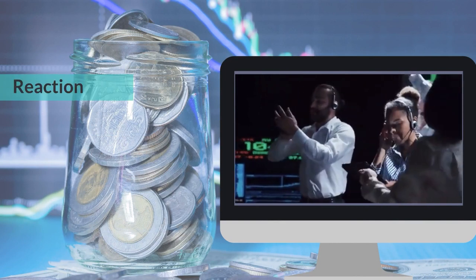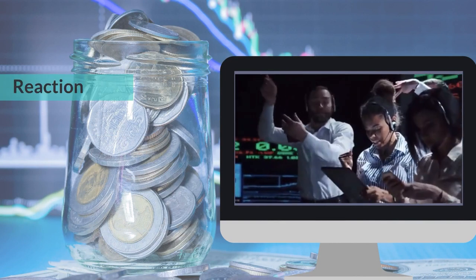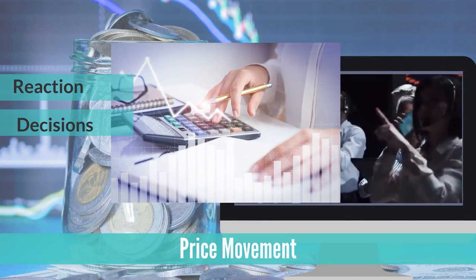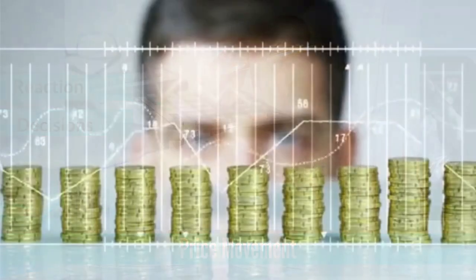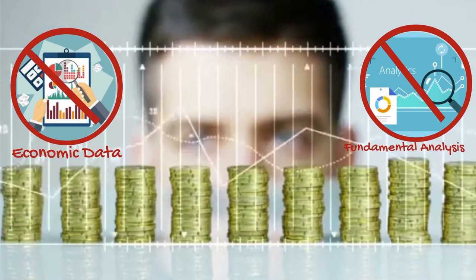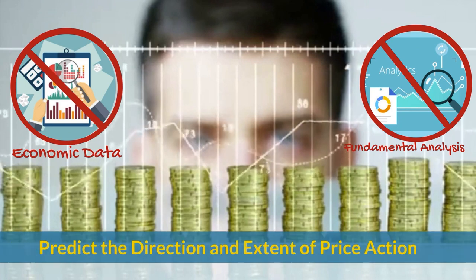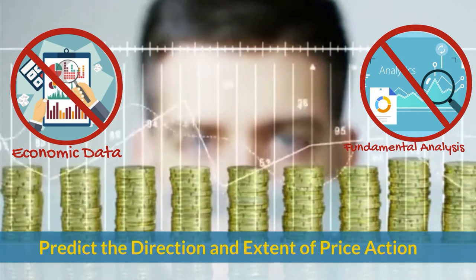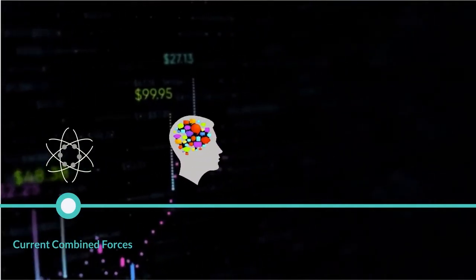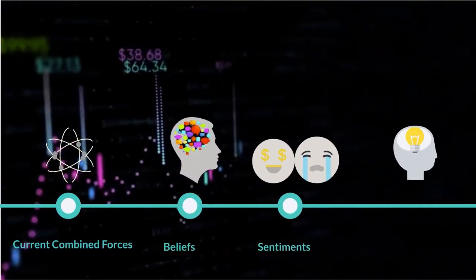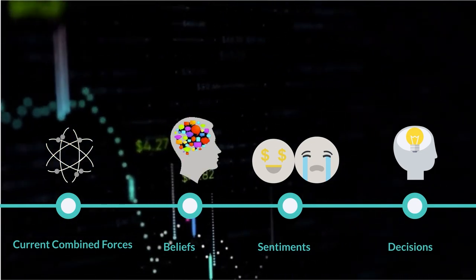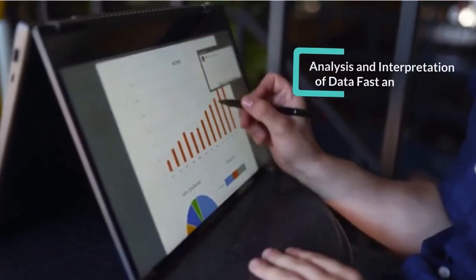Therefore, a price action trader identifies the direction and extent of price movement directly on the current price chart, as the price chart reveals transparently all combined beliefs, sentiments, and decisions of market participants, which makes the analysis and interpretation of data fast and efficient.